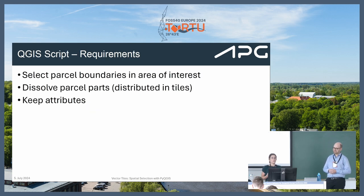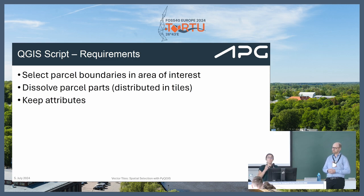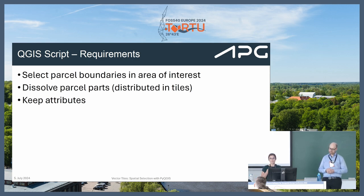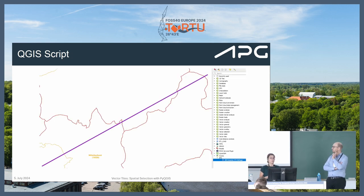It's also possible to have really complex polygons as area of interest, so it's easier to have it automated and there are fewer mistakes. Our requirements were to select the parcel boundaries in our area of interest, then dissolve the parcel parts — since it's a vector tile, geometry is distributed across different tiles — and we want one geometry for the whole parcel, keeping the attributes for post-processing.